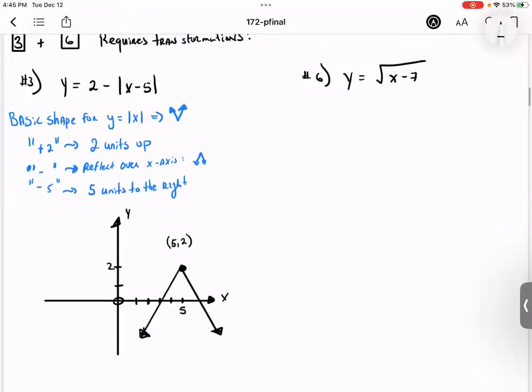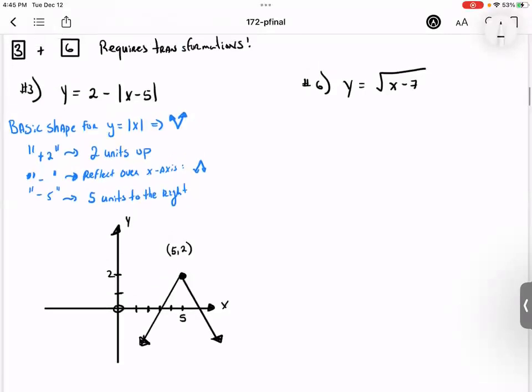Okay, for number six it's a little bit easier. There's only one transformation rule, and that is the minus seven. So what does the minus seven indicate? Are we going to go seven units to the left, to the right, up, or down? Yep, because the minus seven is attached to the x, which is inside of the square root function, we go seven units to the right.